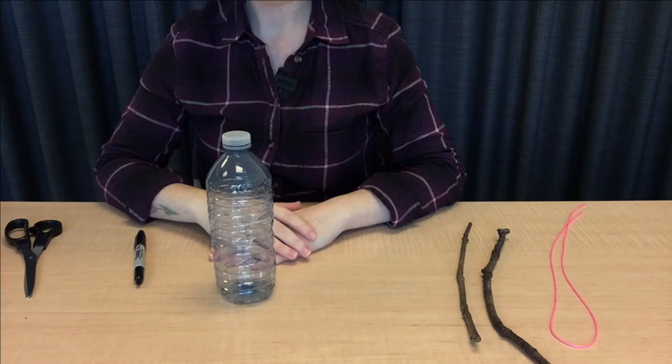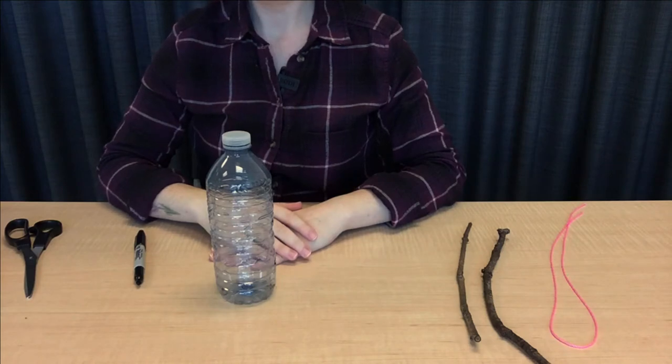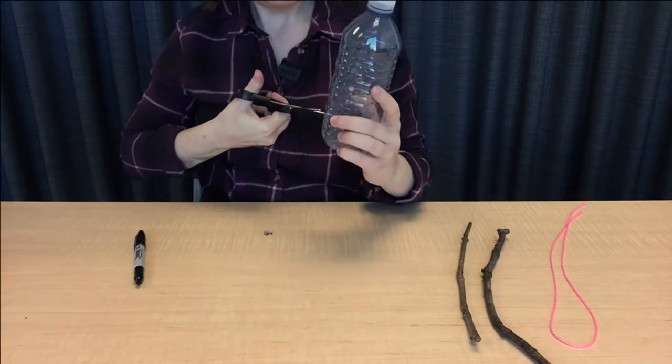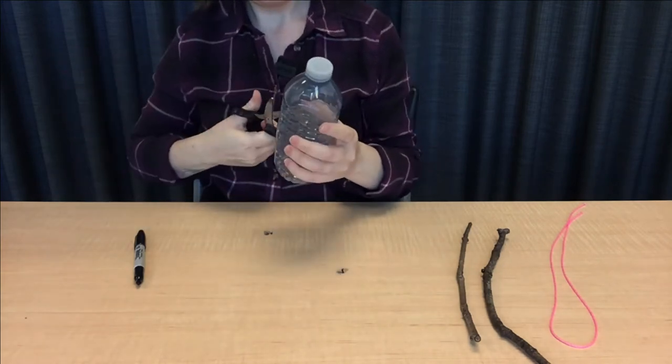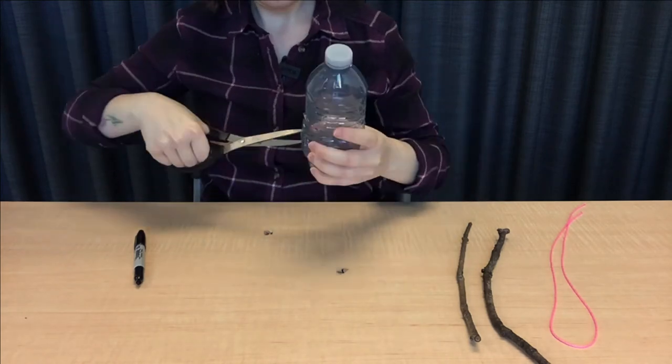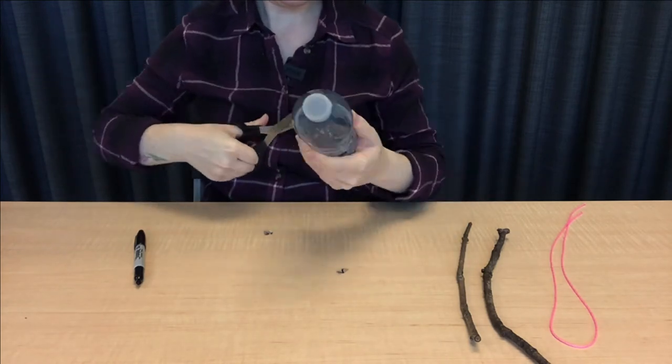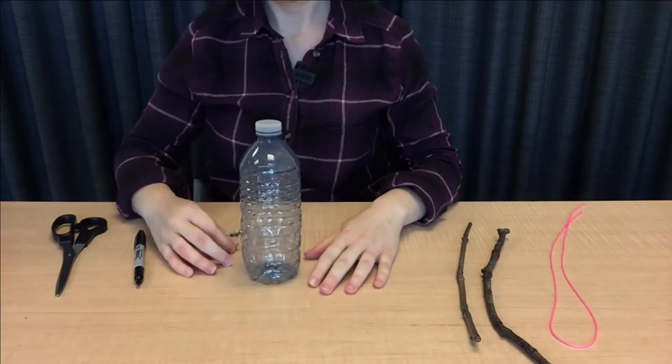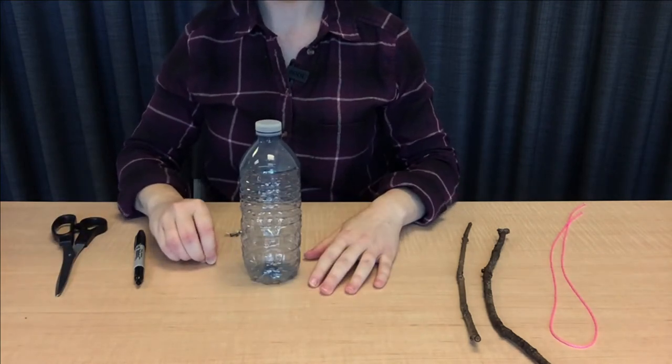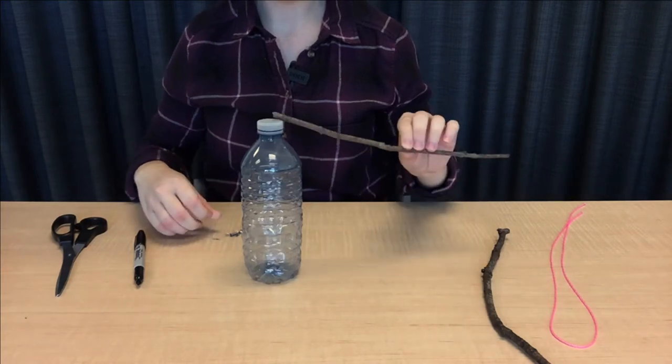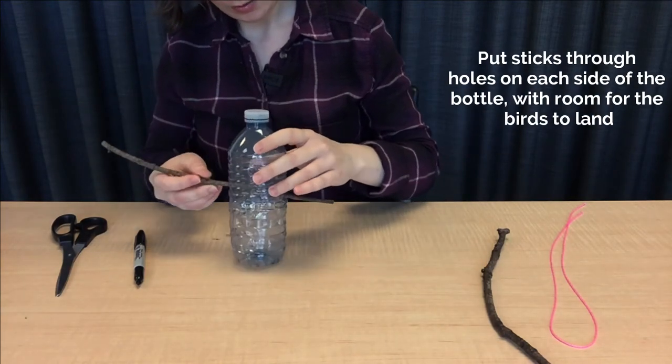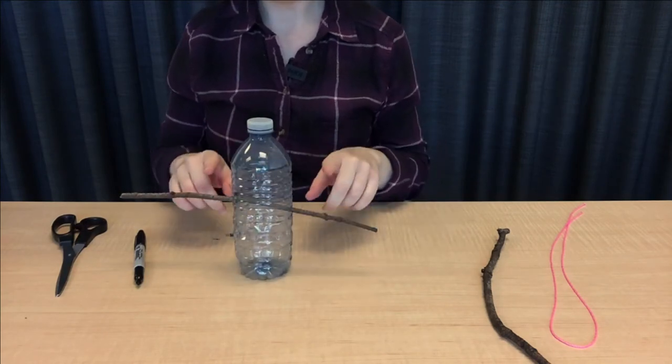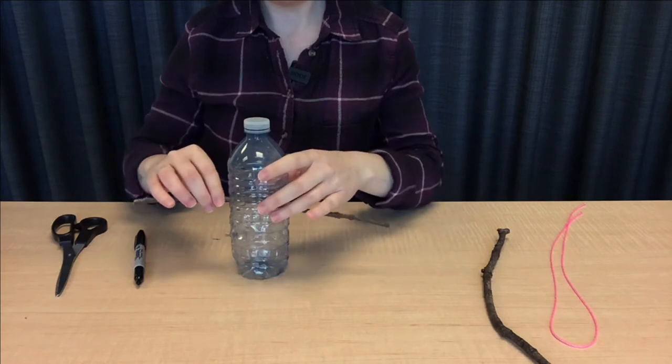We'll continue making those holes for the other three. When we have our holes made we'll put our sticks through. We want it so that there's room for the birds to land outside of the water bottle.